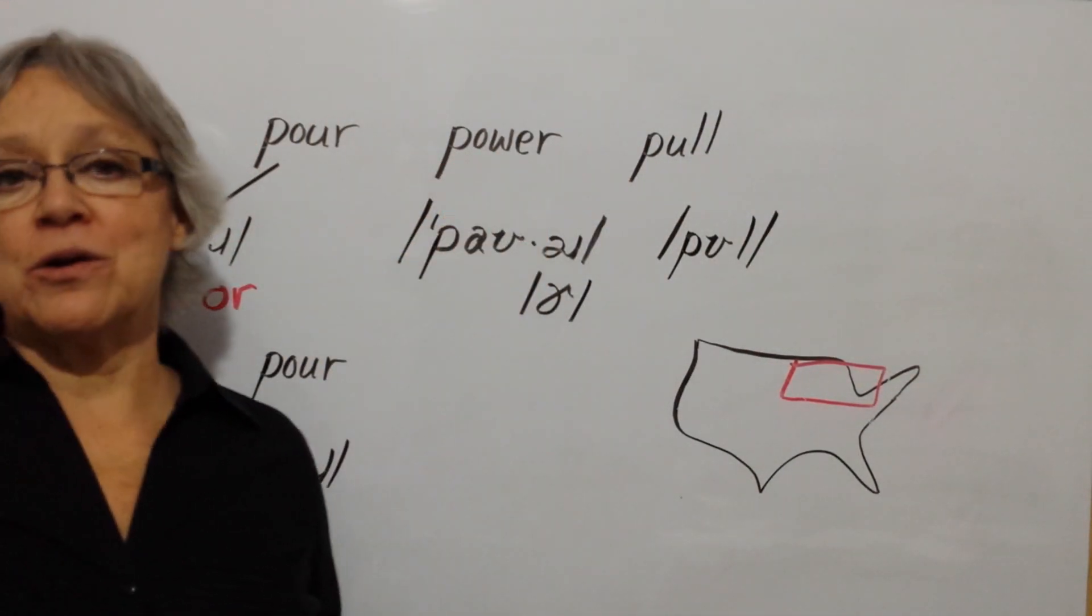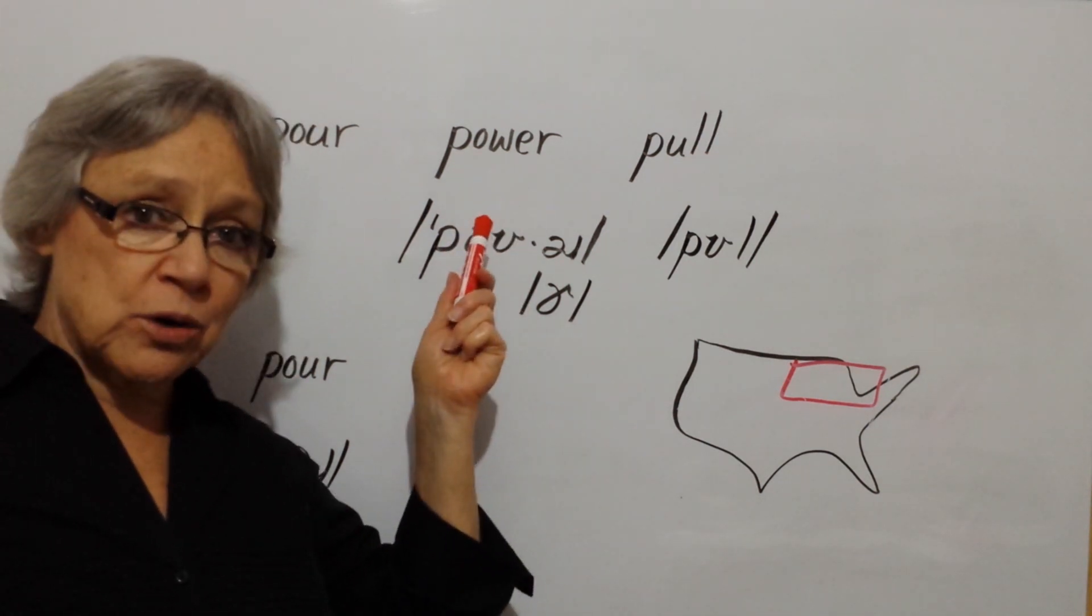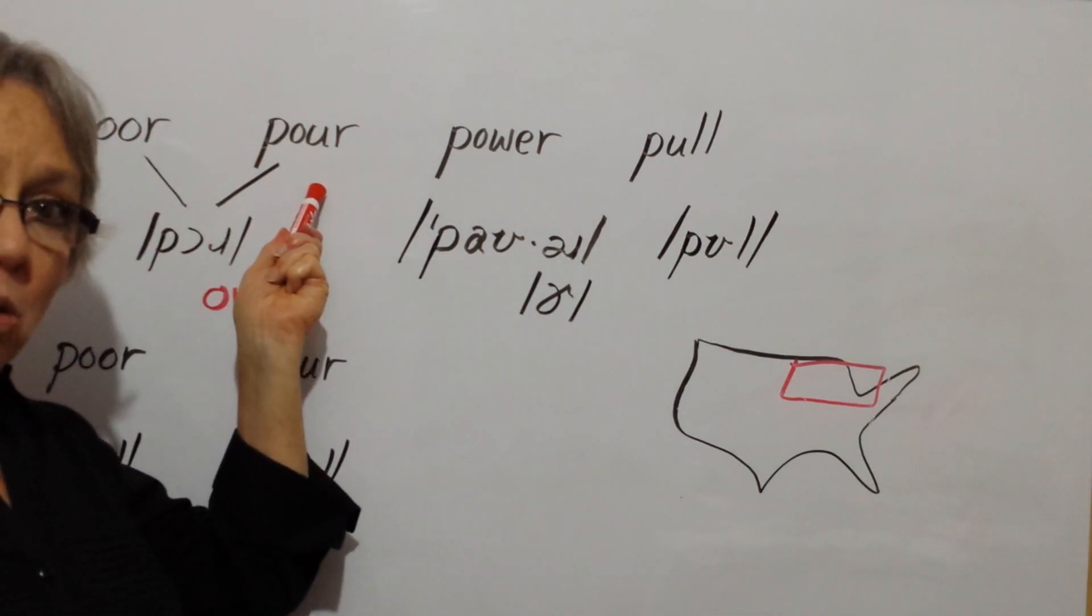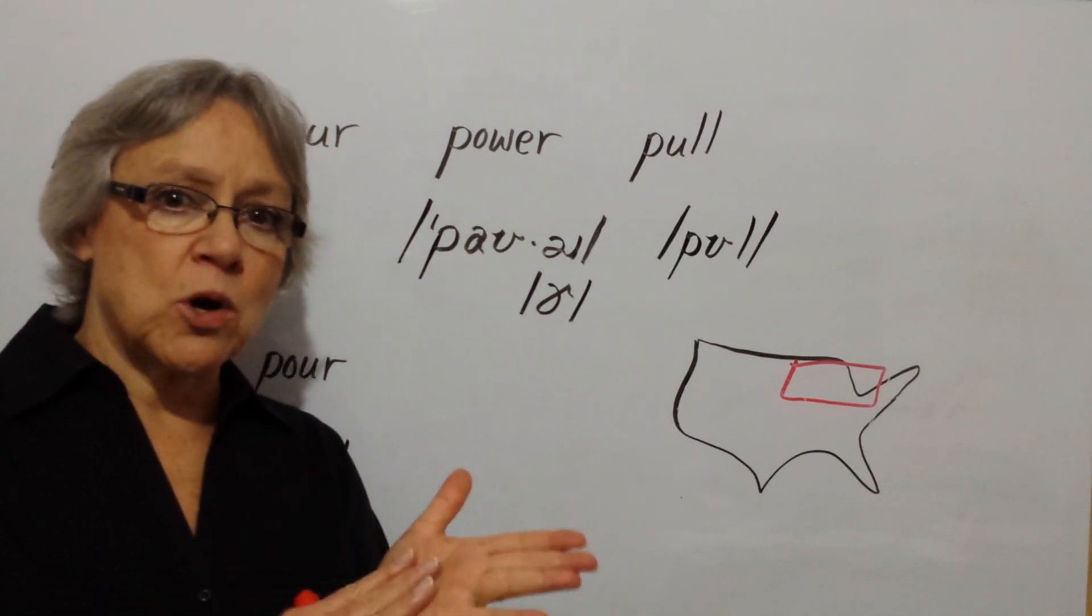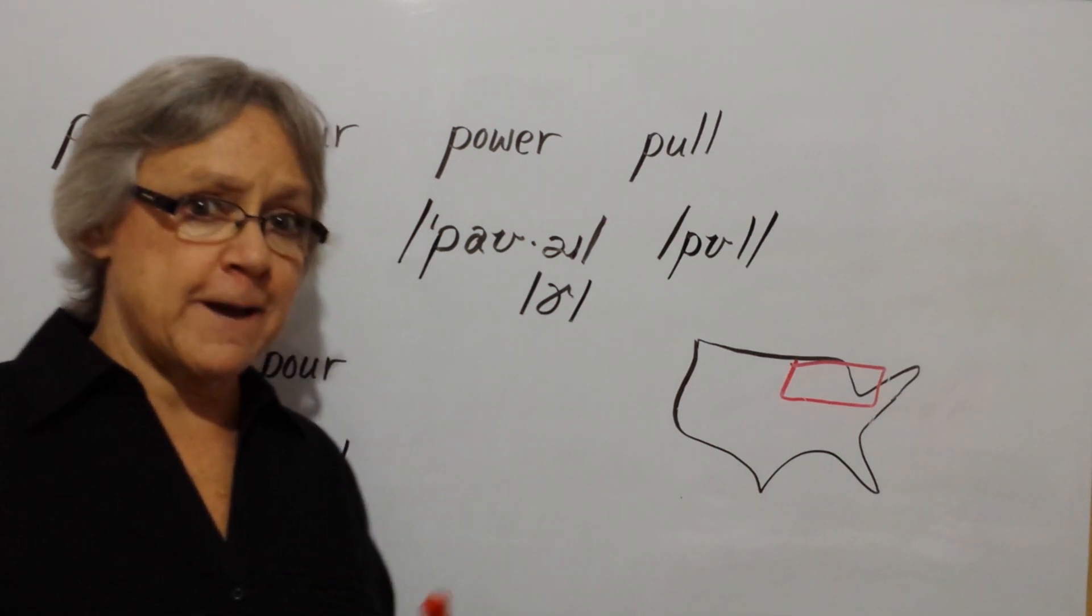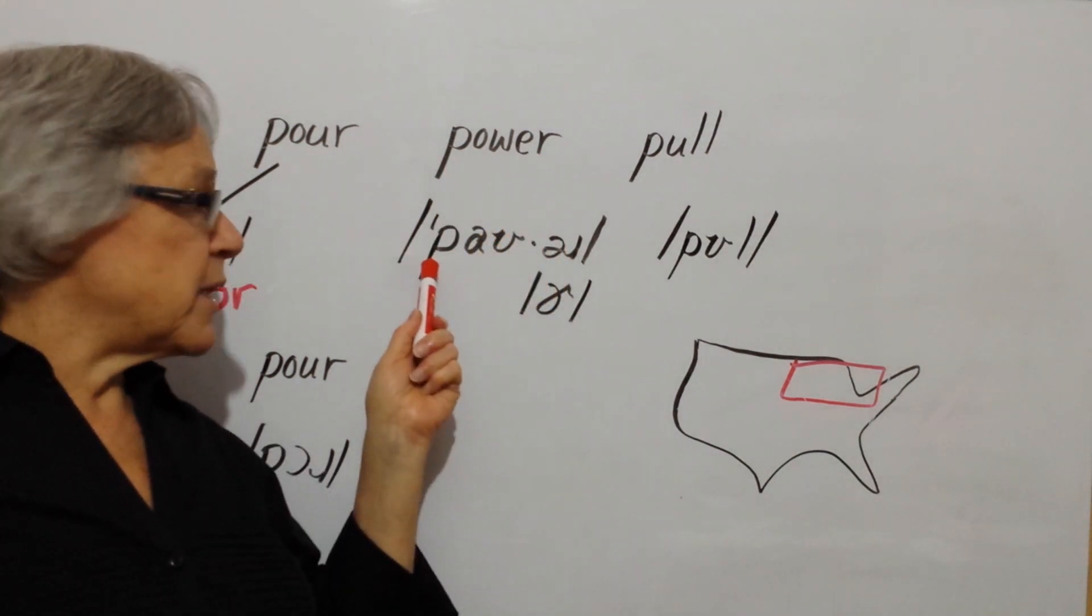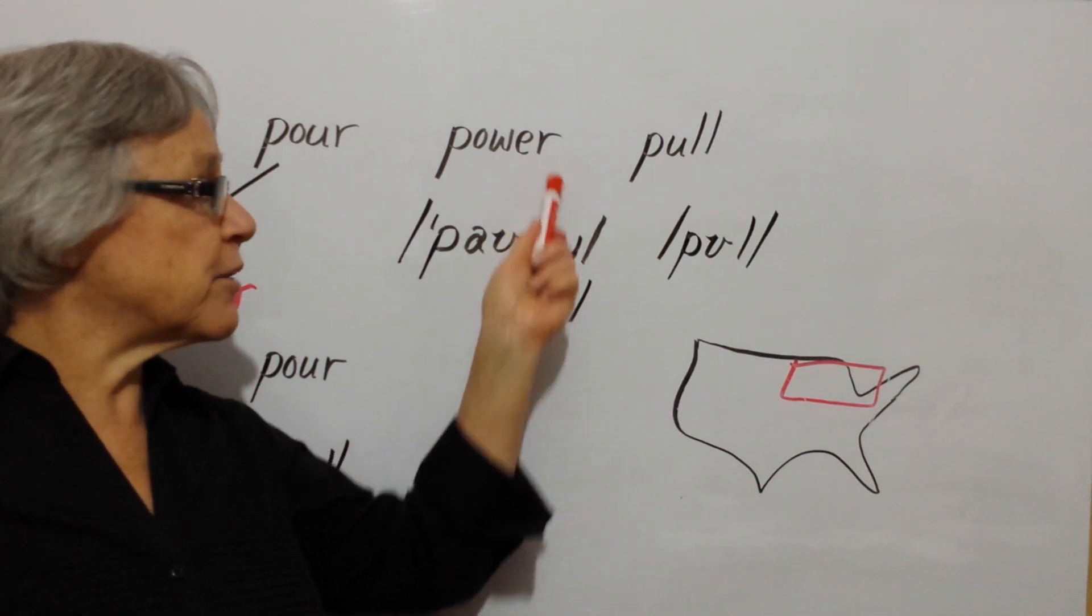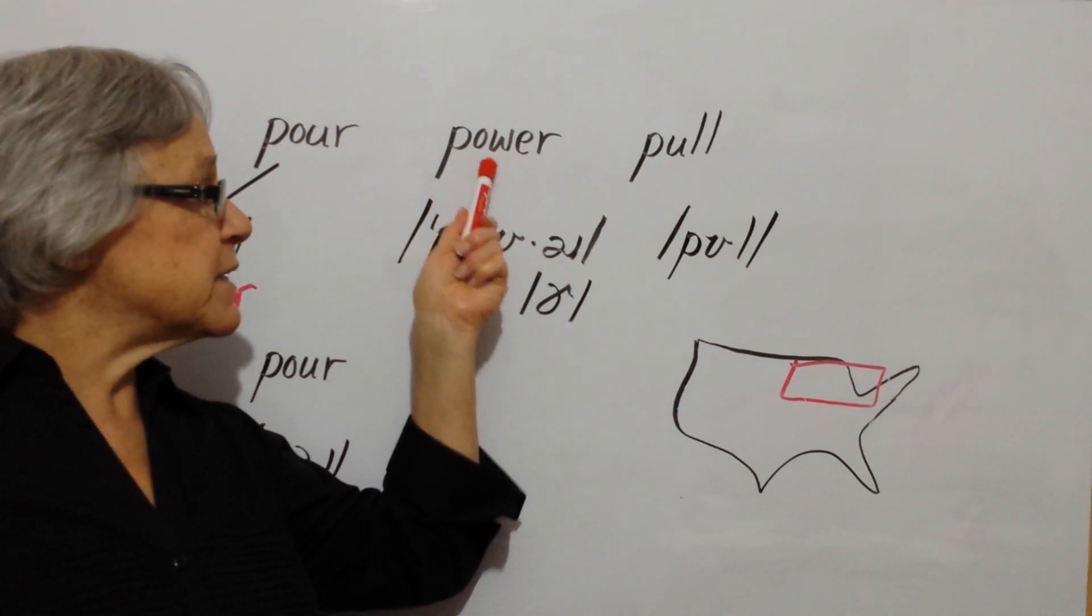This word, power, is different in a few ways. The first way is that power has two syllables, and the two words pour only have one syllable. So, power. It has two syllables or two beats. Power. It begins with a 'puh' or a P and it ends in an R. So it has the 'puh' sound at the beginning and a sound for the letter R or 'ruh' at the end. But this vowel is different.